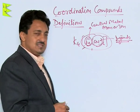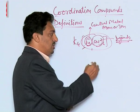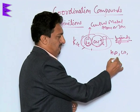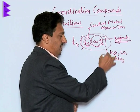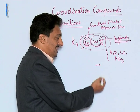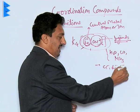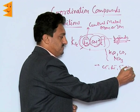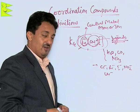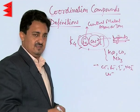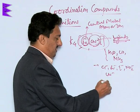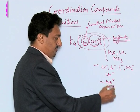Ligands can be neutral, like water, carbon monoxide, and ammonia — these kinds of neutral molecular species are ligands. Or we can have anionic ligands like chlorido, bromido, iodido, nitrito, and cyanido — all these negatively charged or anionic molecular species act as ligands. There can also be positively charged ligands, though very few examples exist, like nitrosonium.